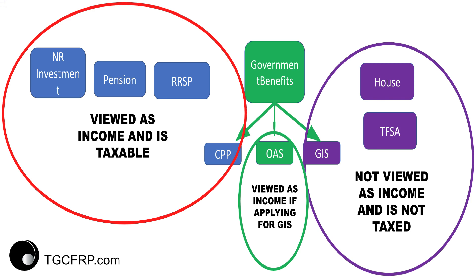At 71, you are required to turn your RRSP into a RRIF — Registered Retirement Income Fund. By age 71 you have to start taking it out; if not, the RRSP has to be dissolved. You could take out the entire amount at once, or you turn it into a Retirement Income Fund where you take it out slowly. There's a percentage that the government sets for mandatory minimum withdrawals. Therefore, if you don't have much and you don't have a pension, you could move your non-registered investment to TFSA or to your house, so you have a better chance to qualify for GIS.